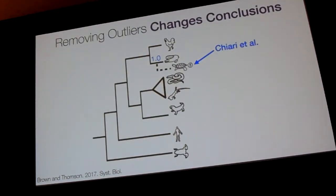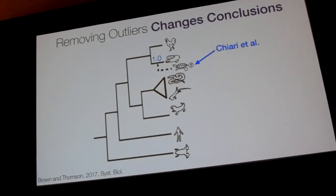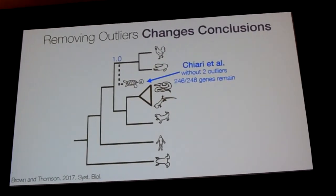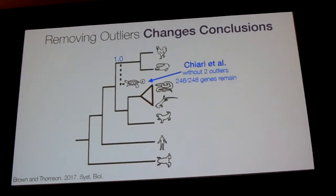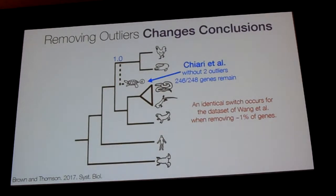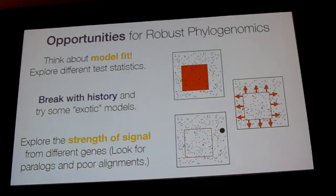Looking back at the overall dataset: if you analyze it as a whole in a concatenated way, you get a posterior probability of one placing turtles sister to crocodilians. If you take out just those two genes, we still have 246 genes left, but we get a very different answer — turtles strongly supported as sister to archosaurs, so they nest with birds and crocodilians together. We started exploring whether similar patterns exist in other datasets, and it seems they do. For one other dataset, if you remove the 1% of genes that strongly support turtles as sister to crocs, you get the same flip of turtles to sister to archosaurs. We're still digging into why these genes show this pattern, but there seems to be a consistent trend.